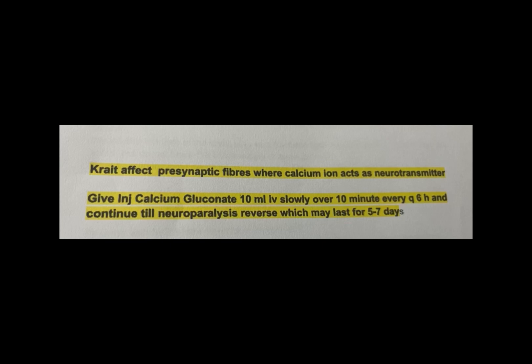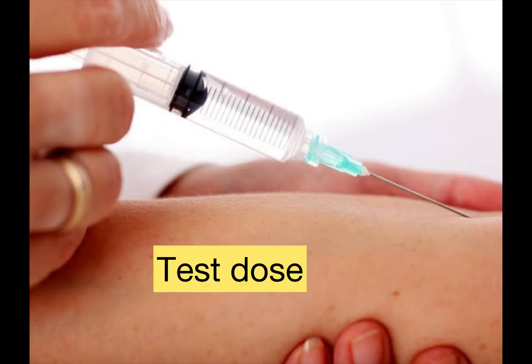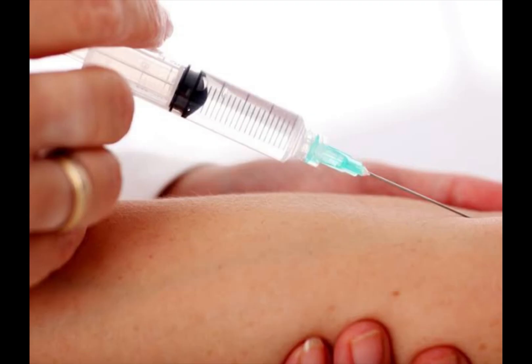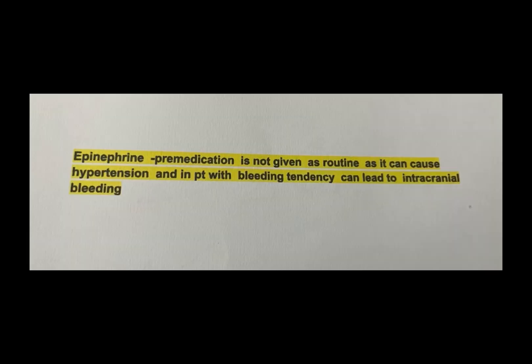Is there any role for an ASV test dose? Test doses have no predictive value in detecting reactions; no test dose should be given. Regarding pre-medication: in high-risk patients with a past history of reaction, IV antihistamine and corticosteroids may be given. Adrenaline pre-medication is not given routinely, as it may cause hypertension and, in patients with bleeding tendency, can lead to intracranial bleeding.